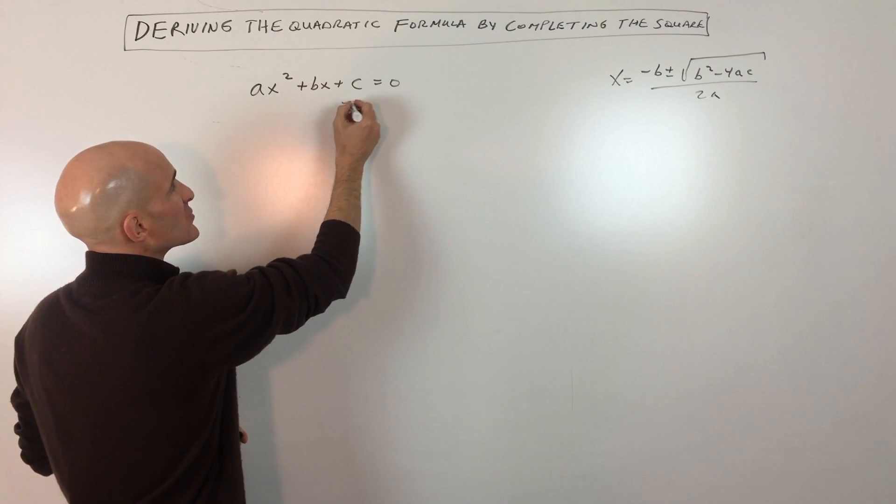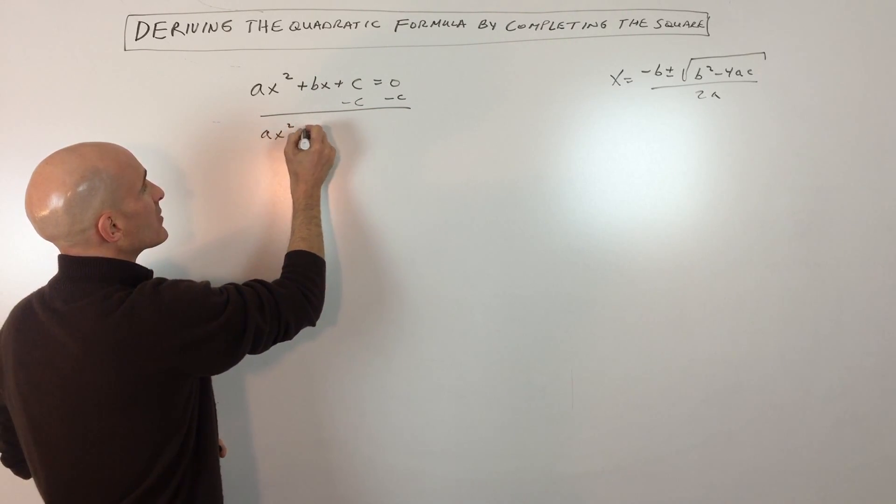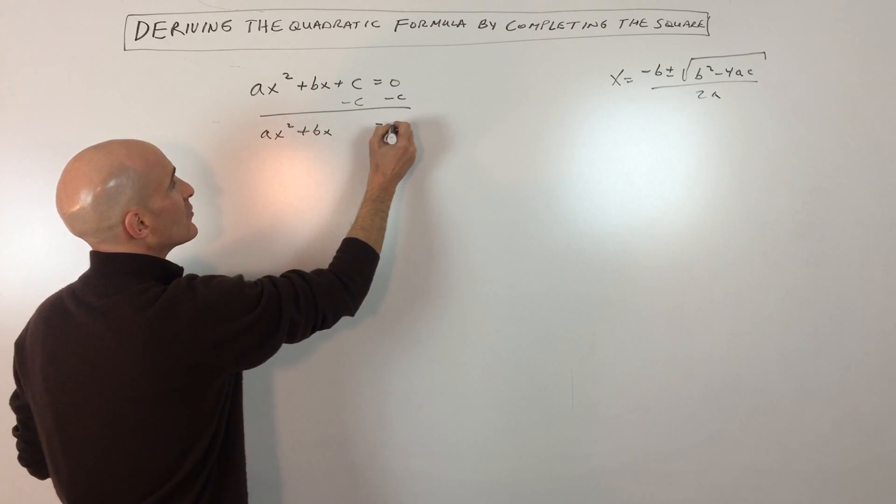So the first thing I'm going to do is just subtract c from both sides of this equation. So that gives us ax squared plus bx equals negative c.